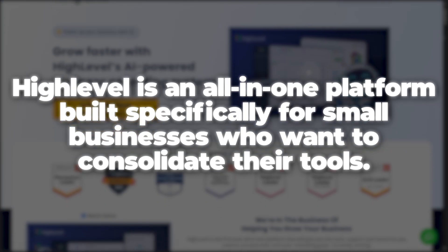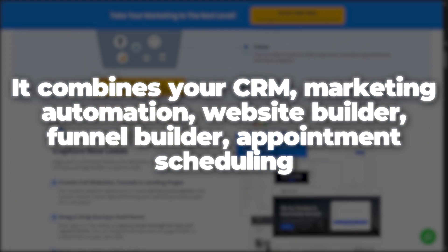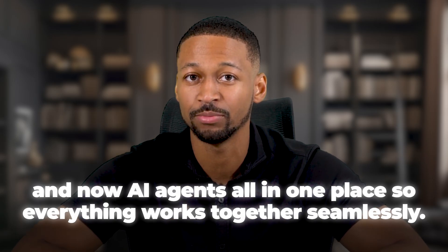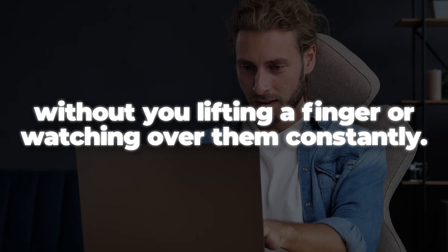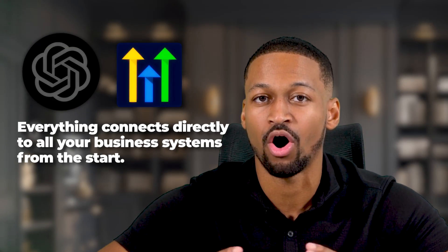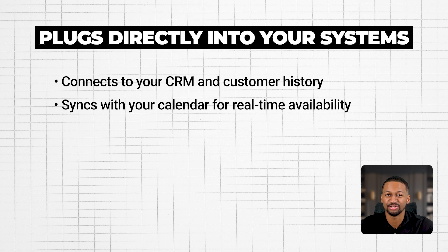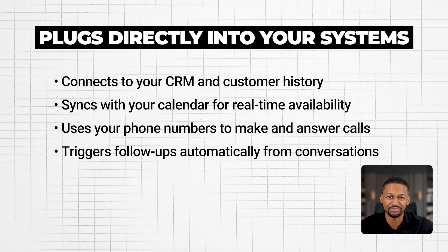For the last year, I have been using pre-built AI agents from a software called High Level. High Level is an all-in-one platform built specifically for small businesses who want to consolidate their tools. It combines your CRM, marketing automation, website builder, funnel builder, appointment scheduling, and now AI agents all in one place, so everything works together seamlessly. The AI agents in High Level are designed from day one to handle real business tasks without you lifting a finger or watching over them constantly. Everything connects directly to all your business systems — your CRM, your calendar for real-time availability, your phone numbers so the agent can answer and make calls, and your workflows so it can trigger follow-up actions automatically based on what happens in conversations.